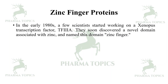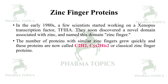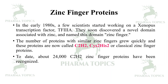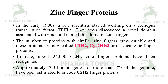In the early 1980s, a few scientists started working on Xenopus transcription factor TFIIIA. They soon discovered a novel domain associated with zinc and named this domain the zinc finger. The number of proteins with similar zinc fingers grew quickly, and these proteins are now called C2H2, or classical zinc finger proteins.